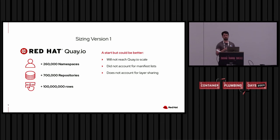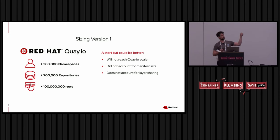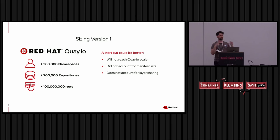Second, this sizing doesn't account for manifest lists. A manifest list is a manifest that points to other sub-manifests. Those sub-manifests actually contain the size. So in this implementation, when we point to that parent manifest, it essentially has no size because it doesn't have the size information of the sub-manifests — so the size is essentially zero and isn't accounted for in these totals.